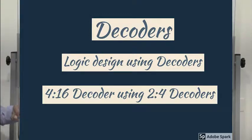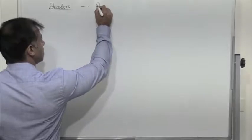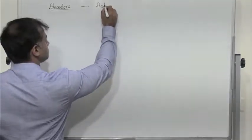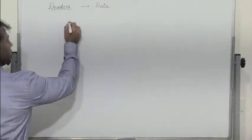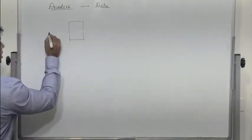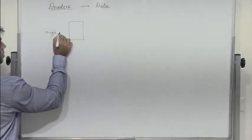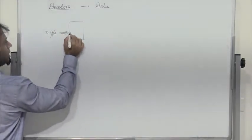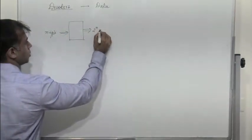What are decoders? Decoders are essentially devices which convert data from one form to another. So if you have a decoder, there are n inputs and 2 to the power n number of outputs.